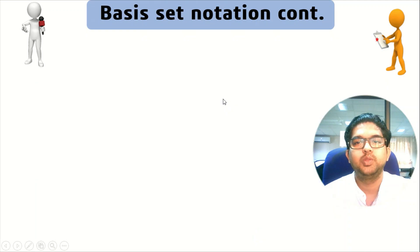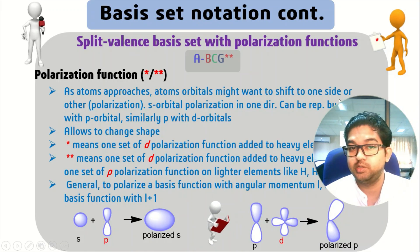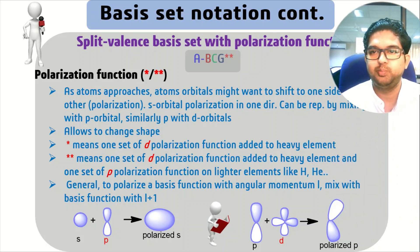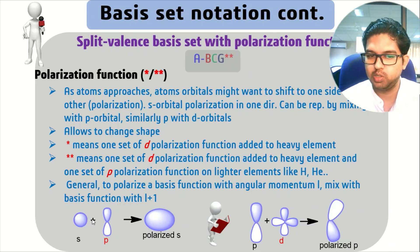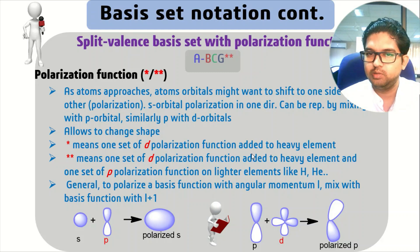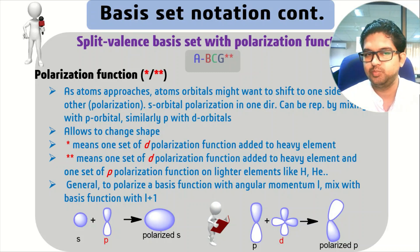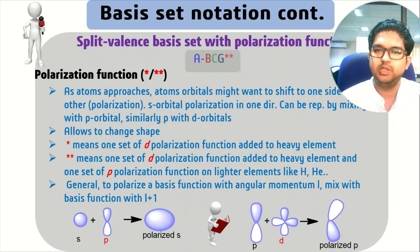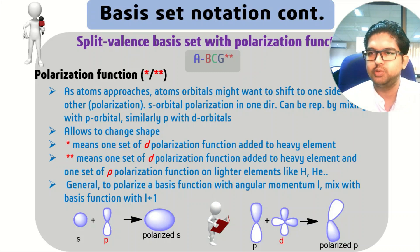Now we have the polarization function. The polarization function — suppose this is the S orbital and this is the P orbital. When we mix these orbitals we will have a polarized S orbital. For the P orbital, we mix the D orbital to get the polarized P orbital. As atoms approach each other, atomic orbitals might want to shift to one side — that is the polarization. S orbital polarization can be represented by mixing a more diffuse P orbital to the S.